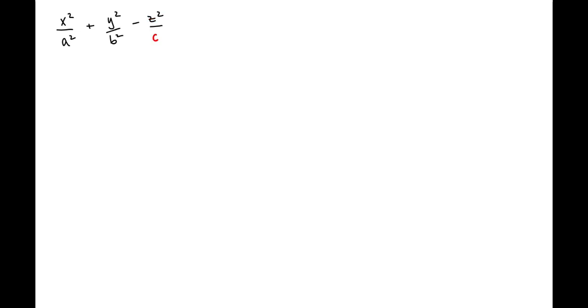Let's figure out how to sketch a hyperboloid of one sheet. A hyperboloid of one sheet has an equation that looks like this. This hyperboloid will be centered at the origin, given by the equation x squared over a squared plus y squared over b squared minus z squared over c squared equals one. That word 'hyperboloid' probably sounds a lot like 'hyperbola,' and you'll see the connection between hyperbolas and this hyperboloid.